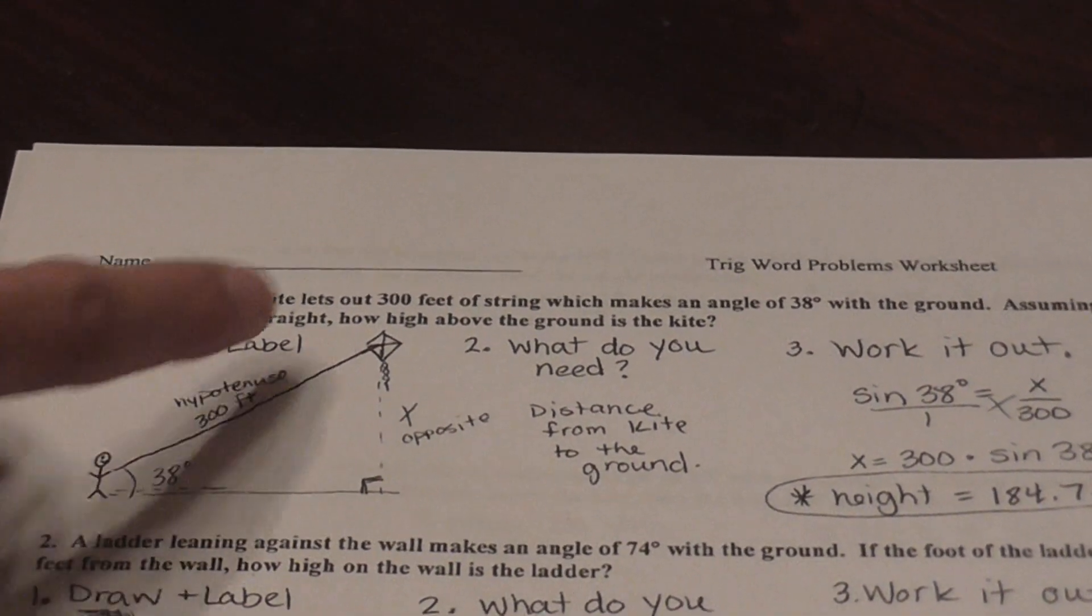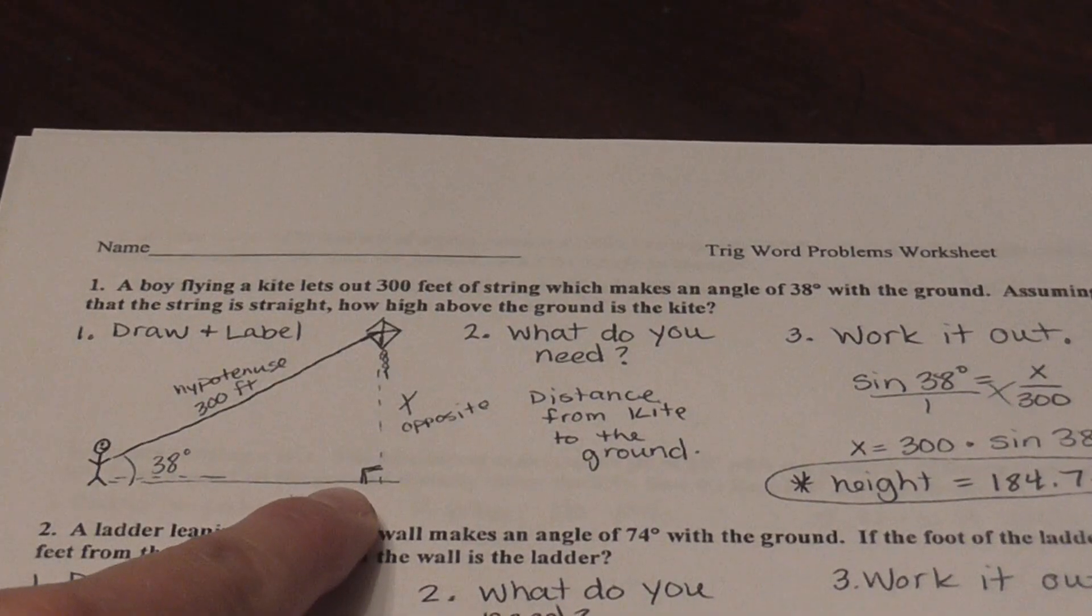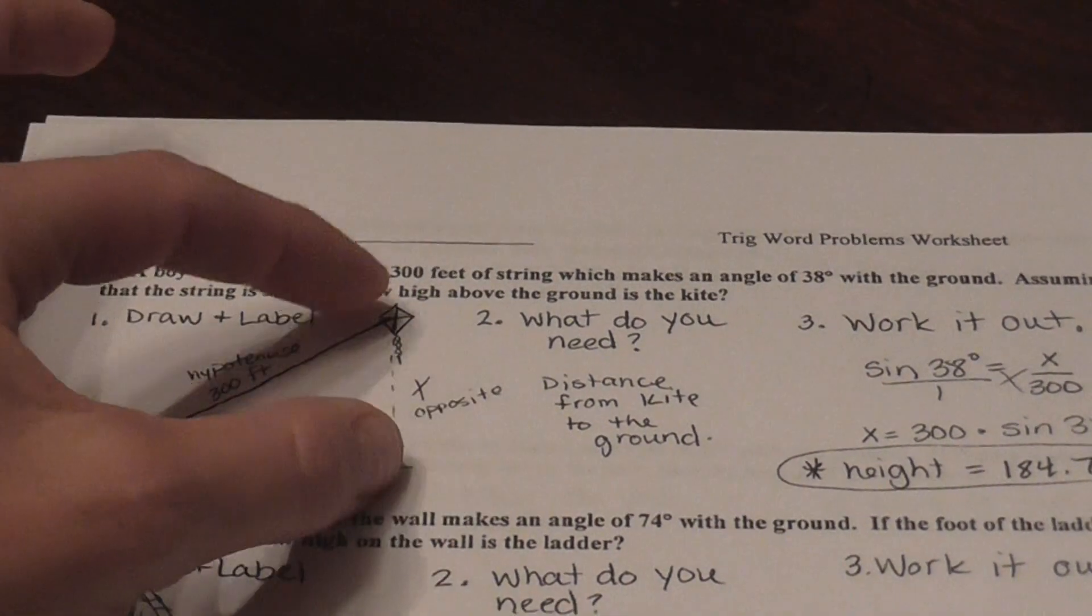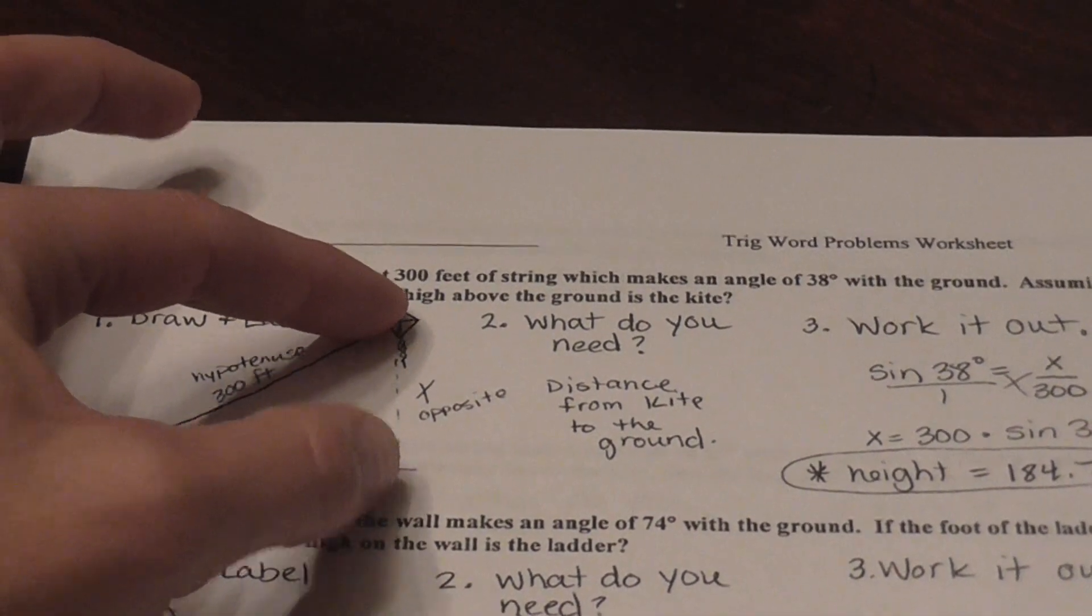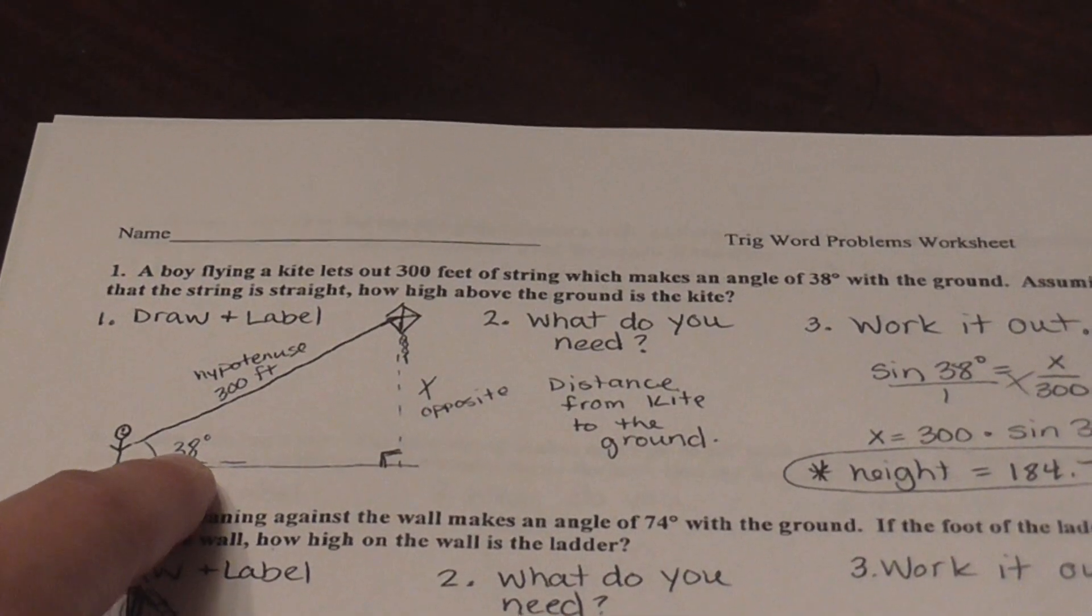So you drew a little picture. You've got a guy, a little boy holding the kite. So it's asking for how high is the kite, so that straight up and down leg. We know the angle here. So what do we need? The distance from the ground or the height. And so we've got to set it up. What uses from my angle, what do I have and what do I want?